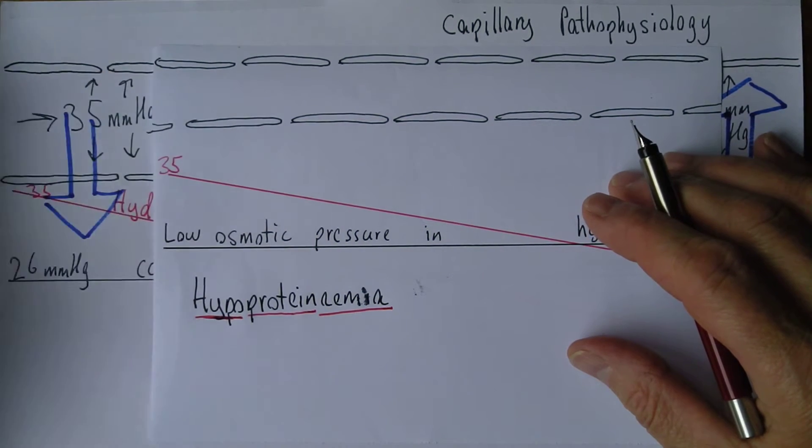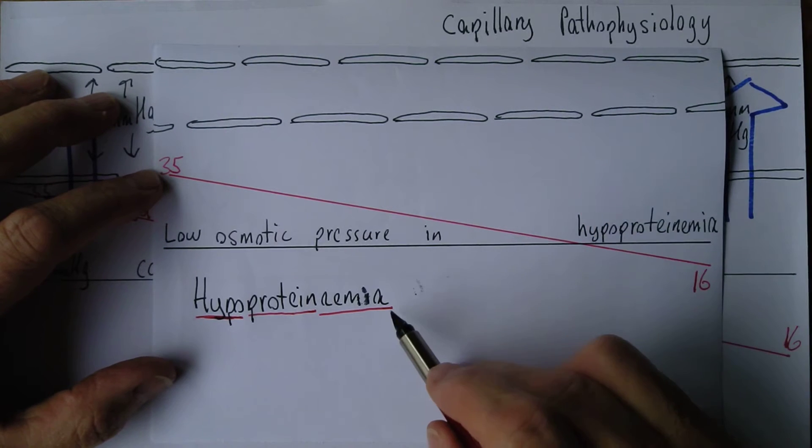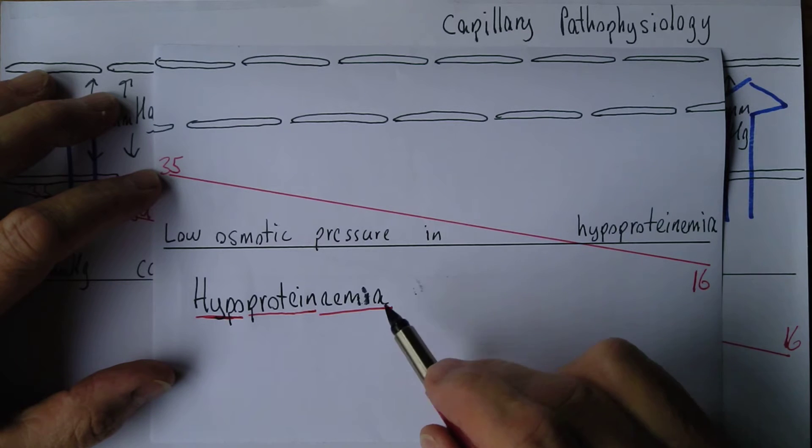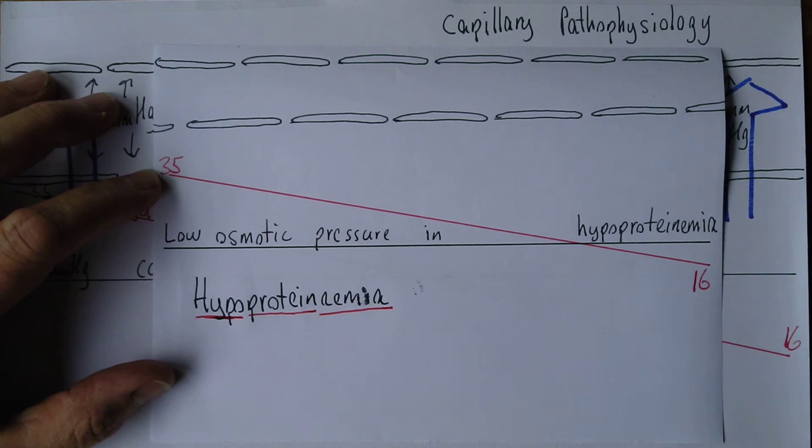This could be a generalized hypoproteinemia as you get in malnutrition, or there could be hypoalbuminemia because the liver is not synthesizing the albumin. But for whatever reason, there are low amounts of protein in the blood.